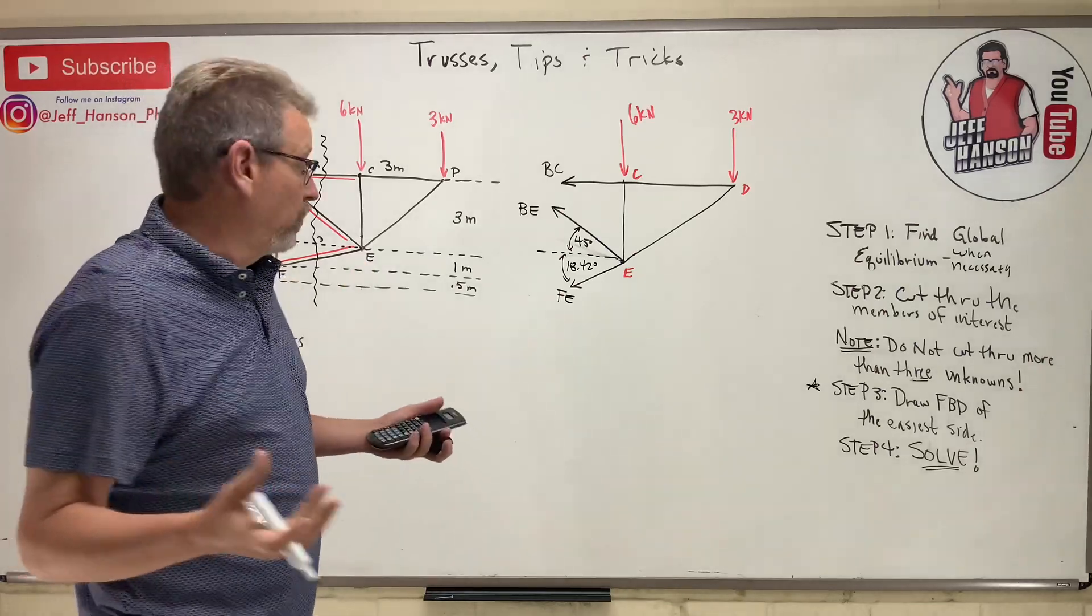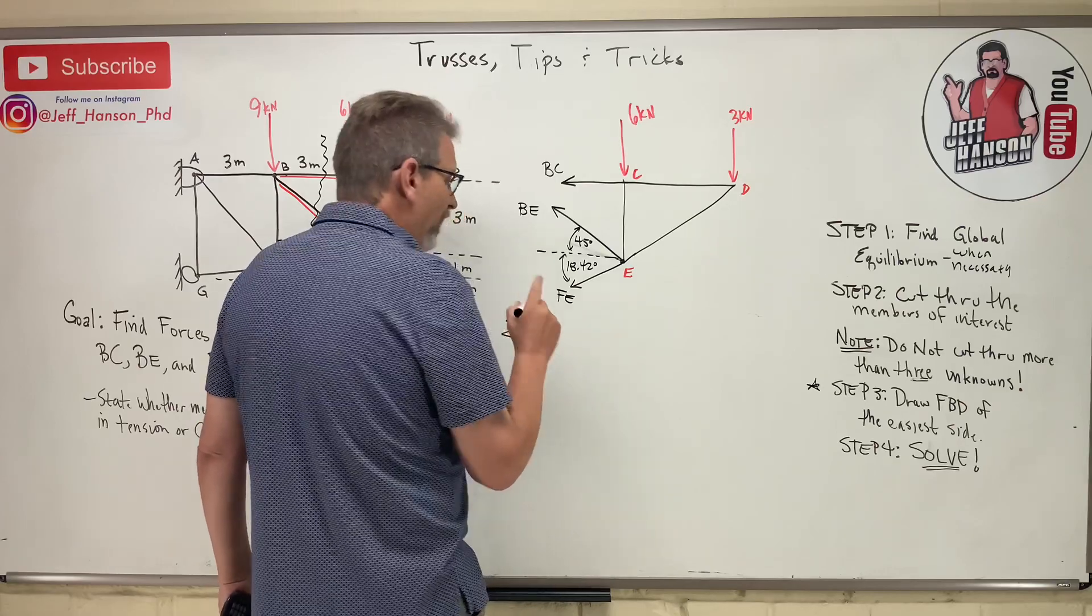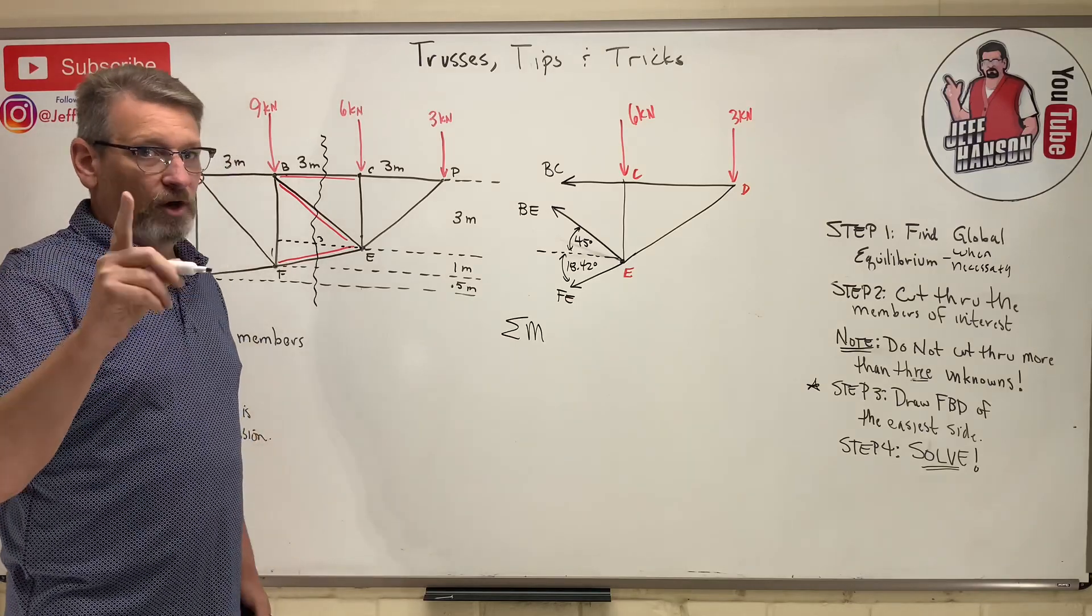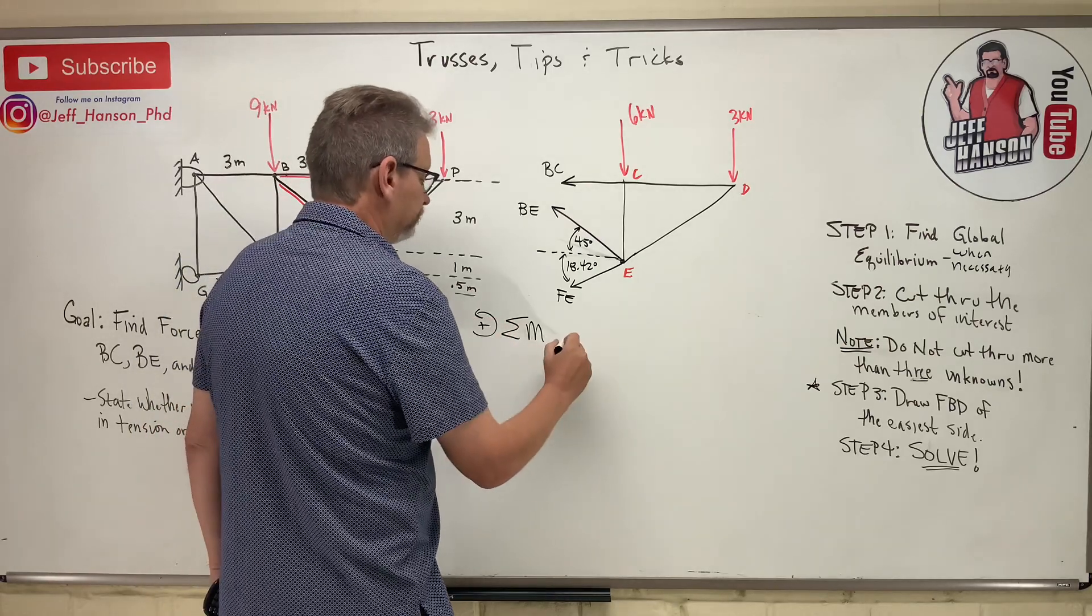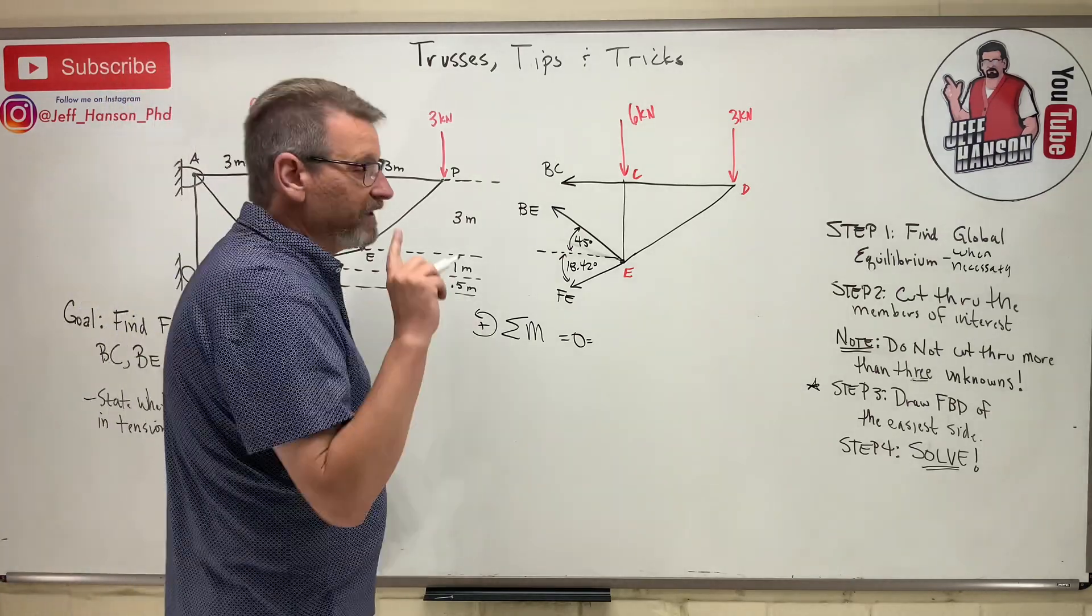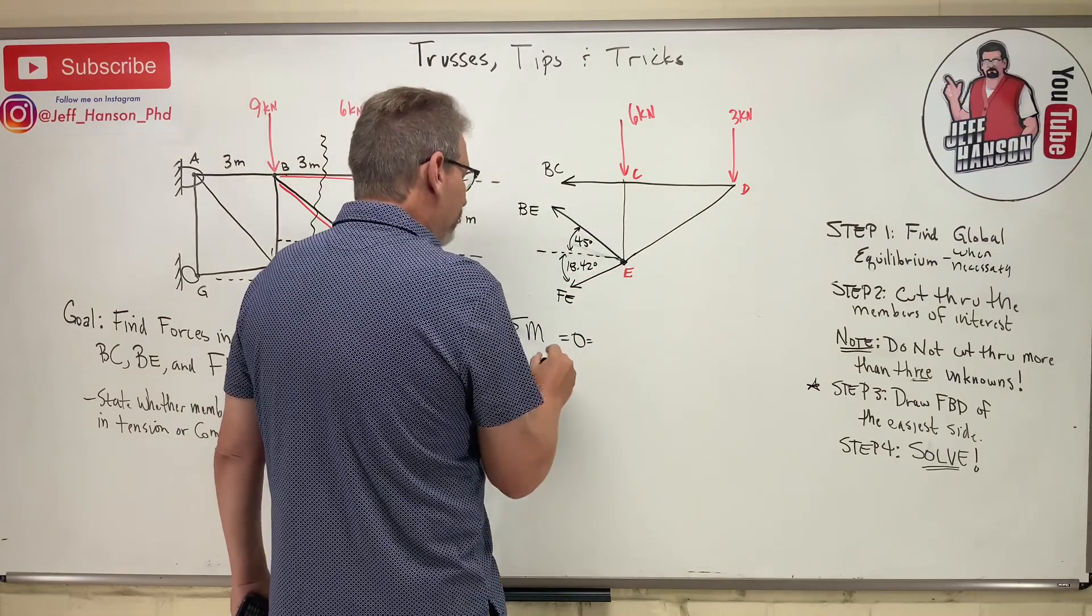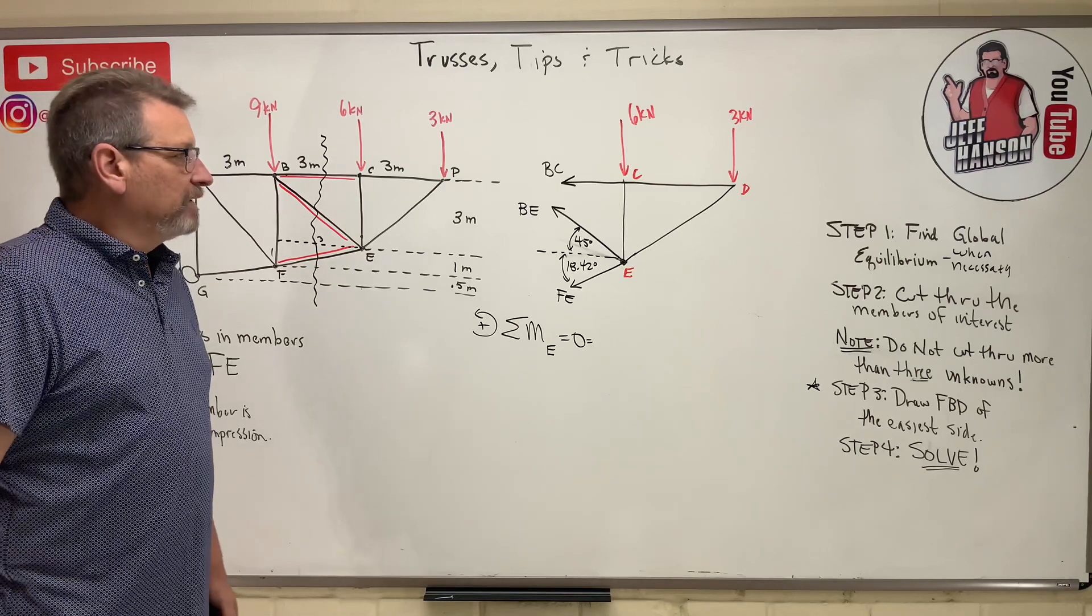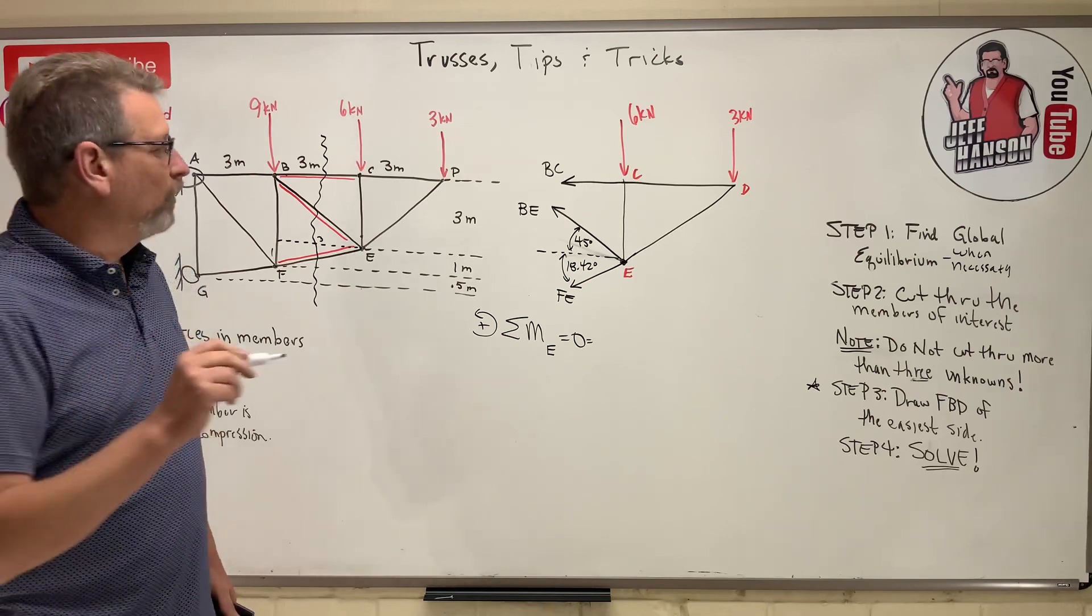The next thing that I would do is I would go to the moment equation. And you want to take the moment somewhere that I knock out some unknowns and I only have one unknown left. That way my moment equation, I get something right away. So where can I take my moments to knock out a whole bunch of unknowns? Well, the obvious one is at point E. Obviously the play here is to take the moment at point E.